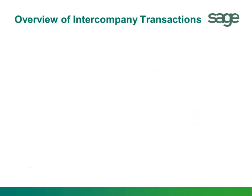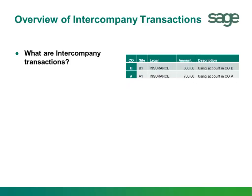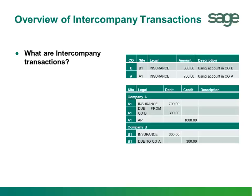To begin, intercompany transactions occur when one company is involved in a transaction with another company of the same entity. These companies may be parent and one or more subsidiaries, two subsidiaries, or even two divisions of one entity. An intercompany transaction is recorded in the financial transactions of both companies of that entity.